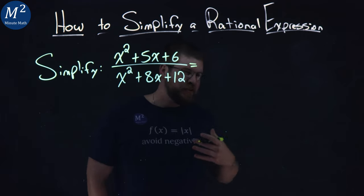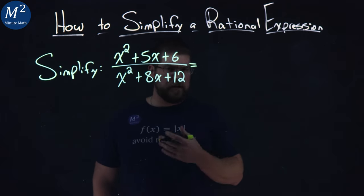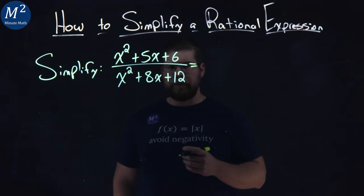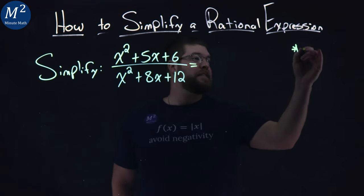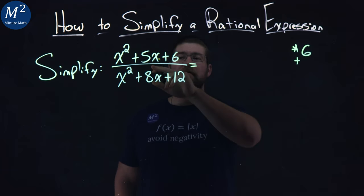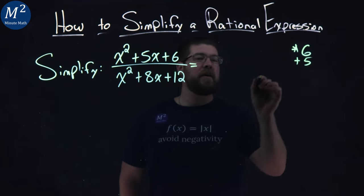To do this, I like to factor each expression if I can. Let's start with the first one, the top one here. We want to see what multiplies to be our c value, which is 6, and adds to be our b value, which is 5.